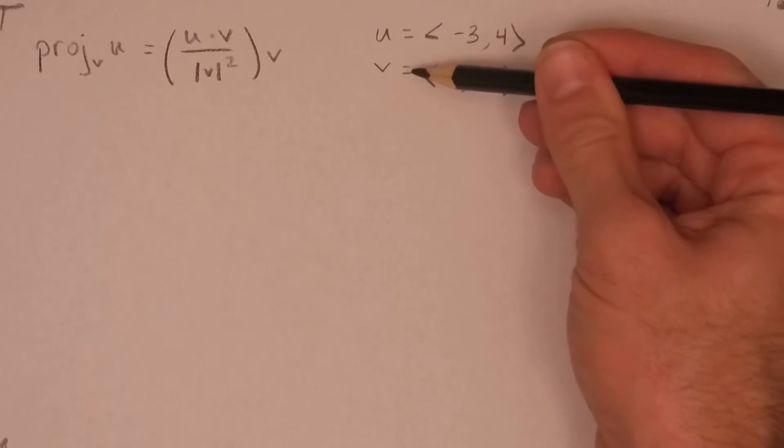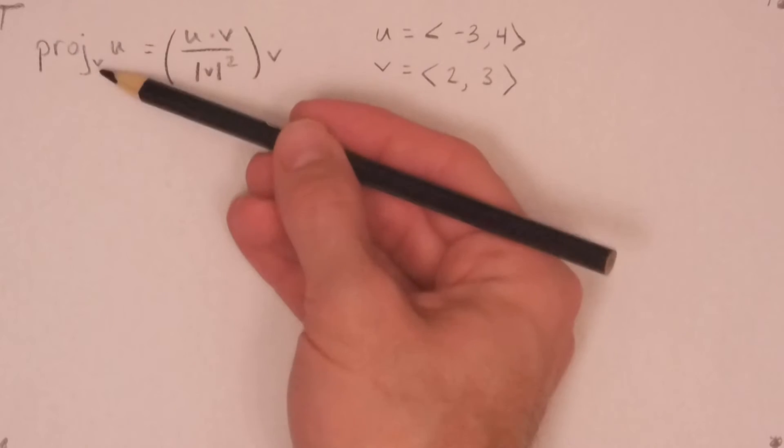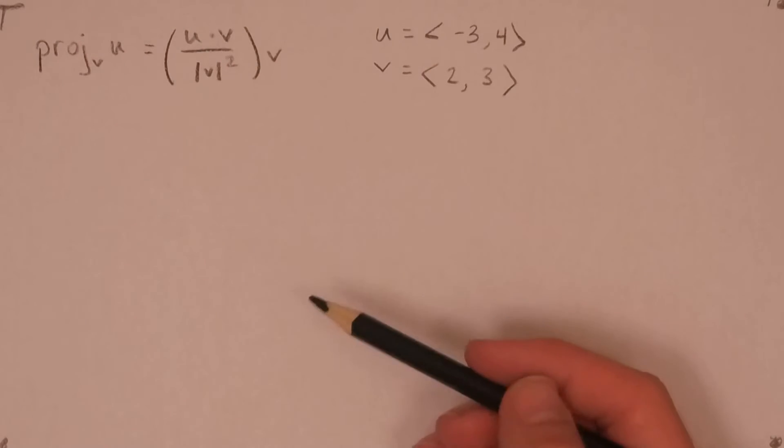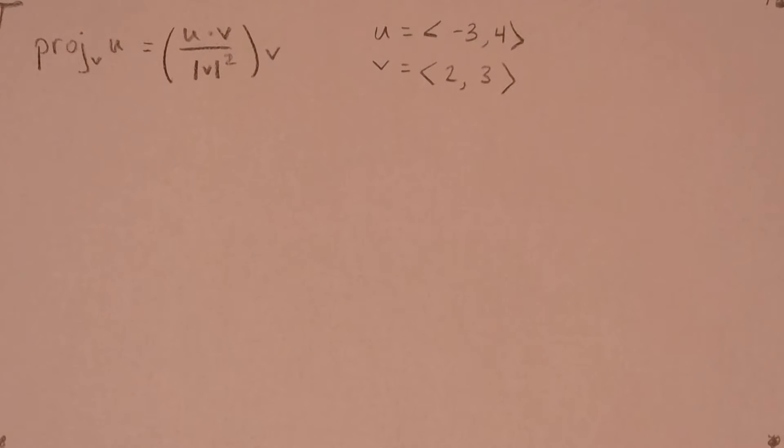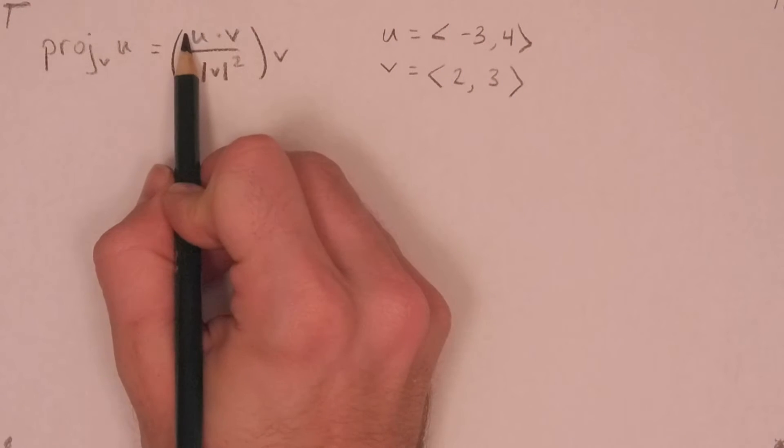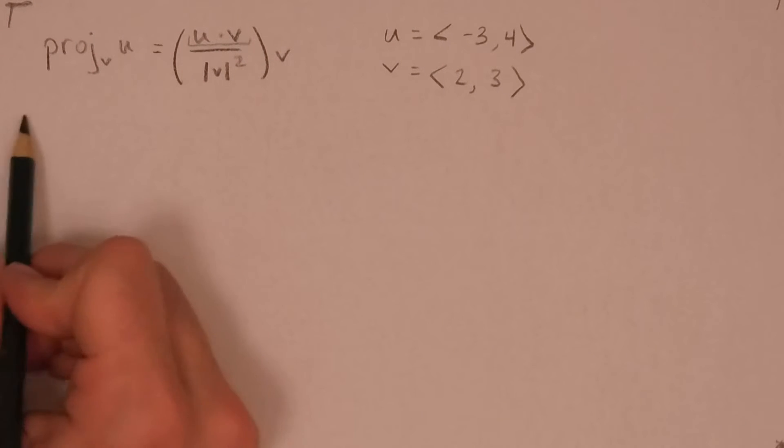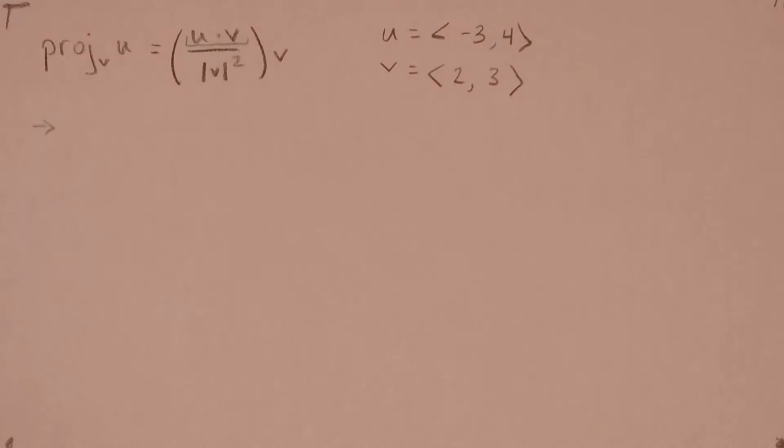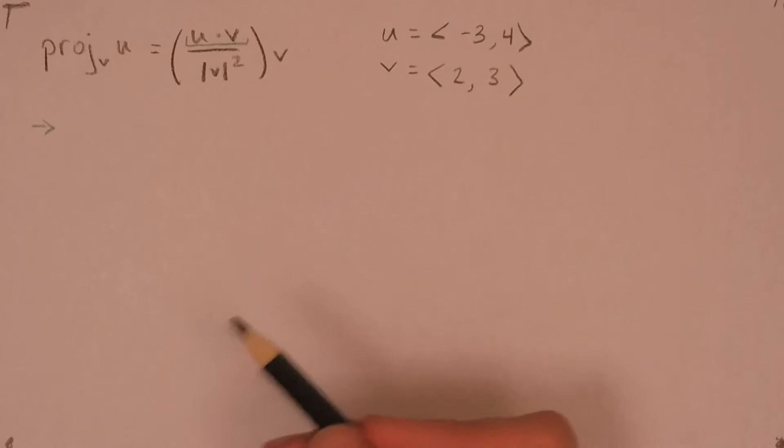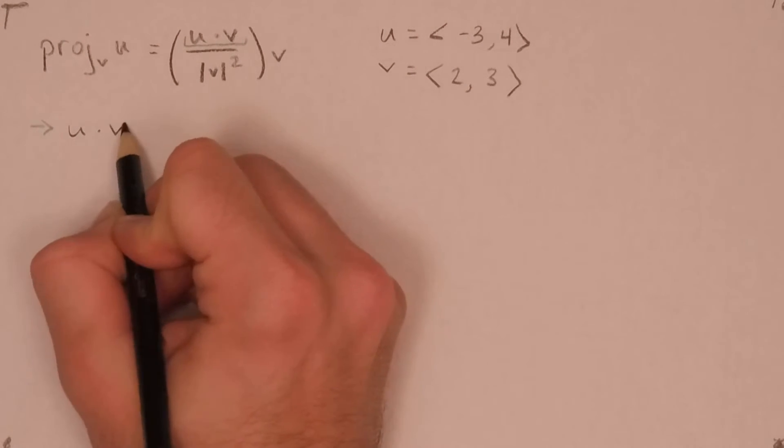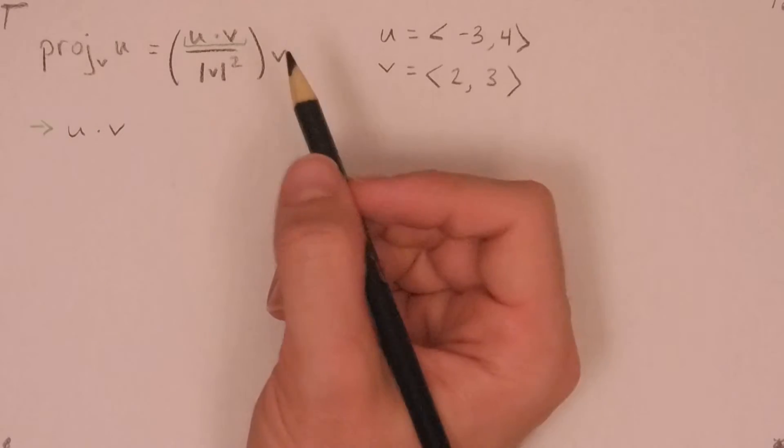Well, the first thing we're going to need in order to find the projection of u on v is the dot product of u and v. And so the dot product of u and v, we want to find that. Let me change colors here. We want to find this, and so we'll do that right here. The dot product of u and v.